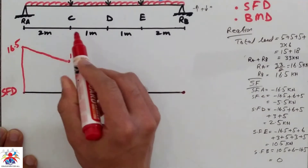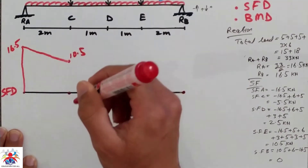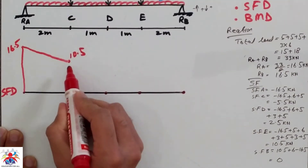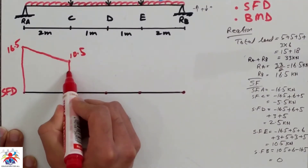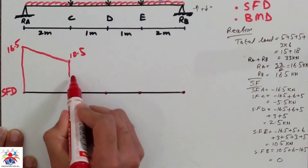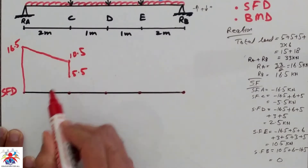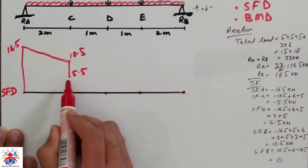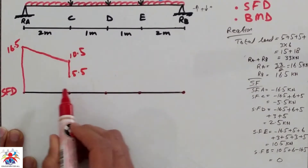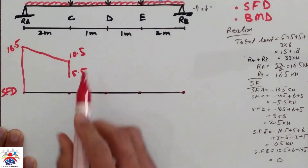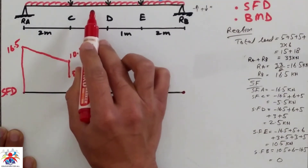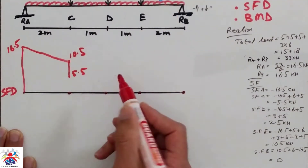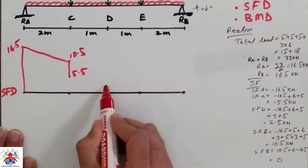Once we get to point C we have a point load acting downwards which pushes the diagram down by 5 kilonewton, so 10.5 minus 5 gives 5.5 kilonewton at point C. Then going from C to D, we have a UDL of 3 multiplied by 1 equals 3 kN, so 5.5 minus 3 gives 2.5, shown with a diagonal line down to 2.5.